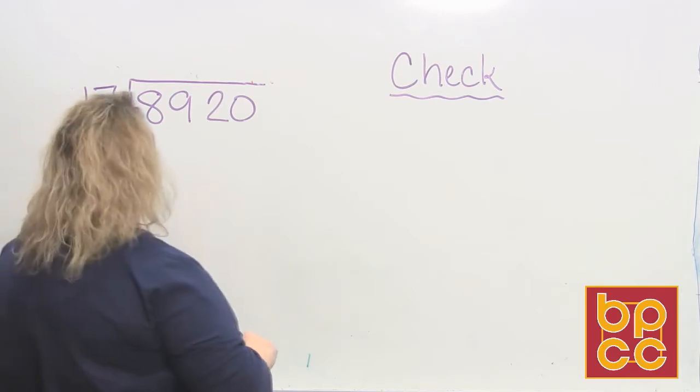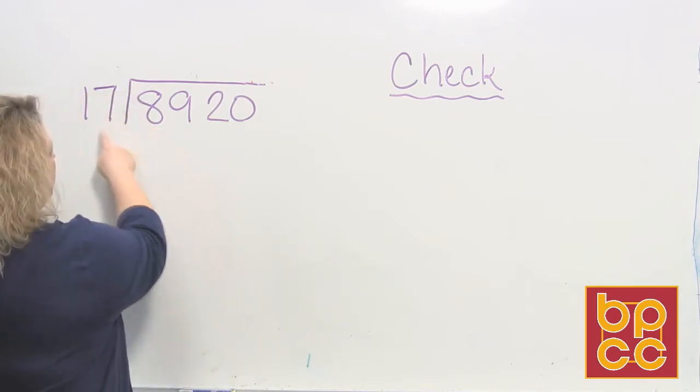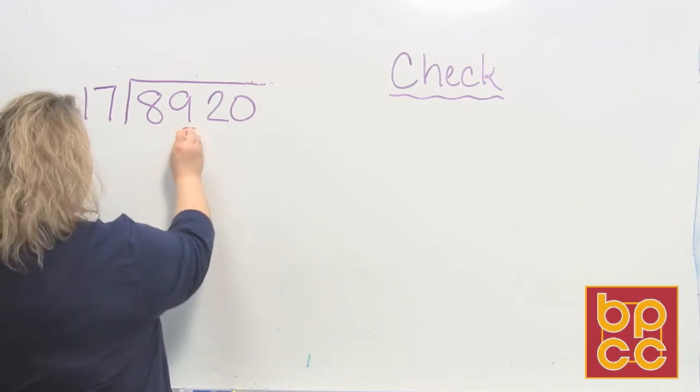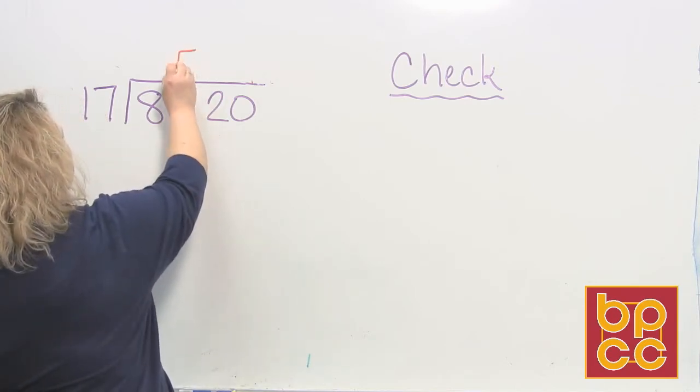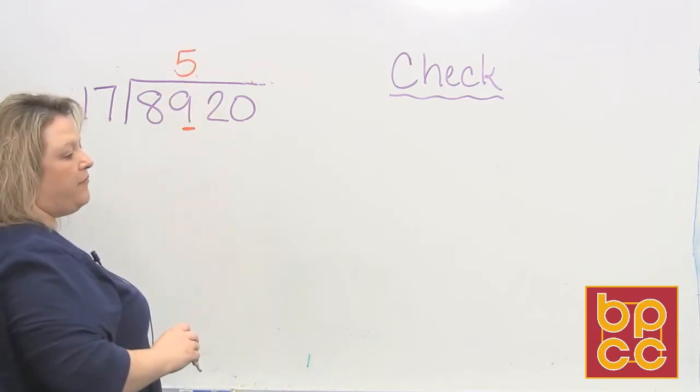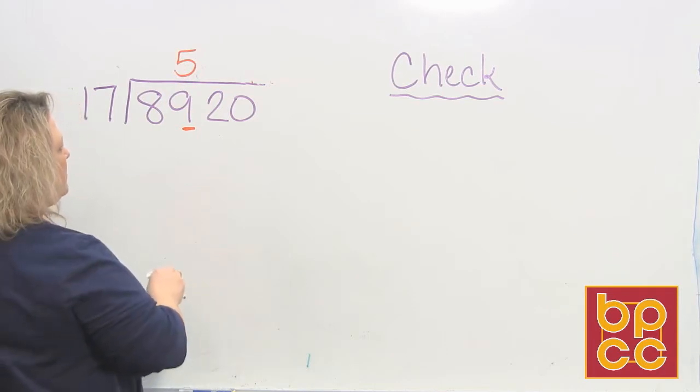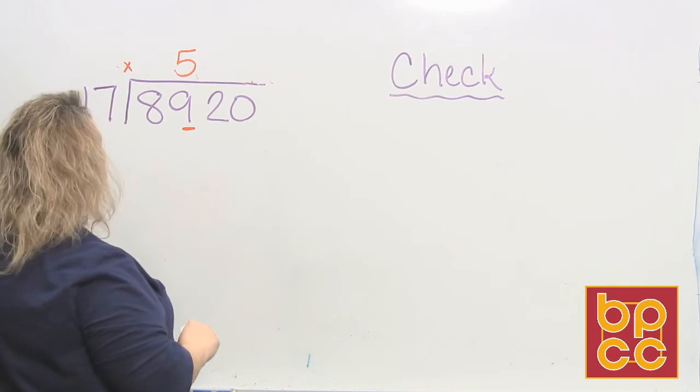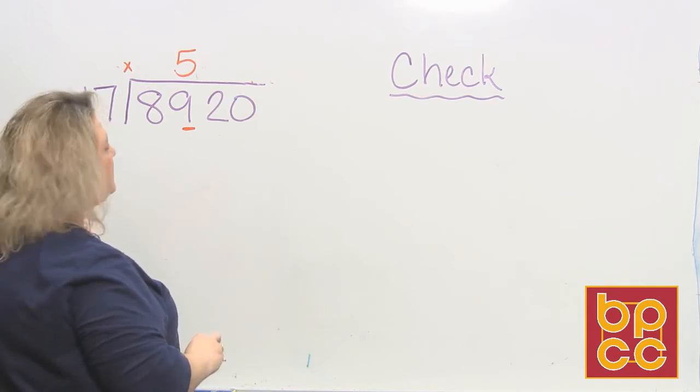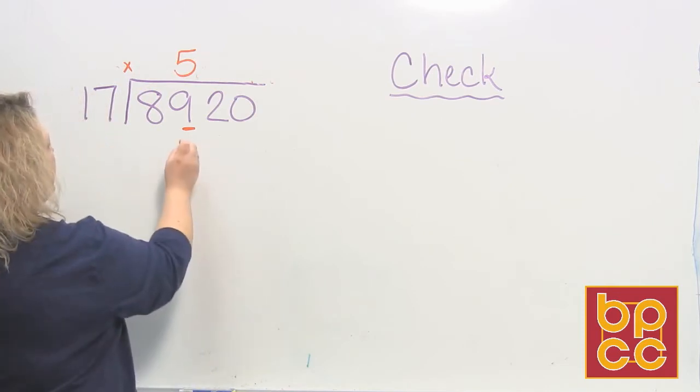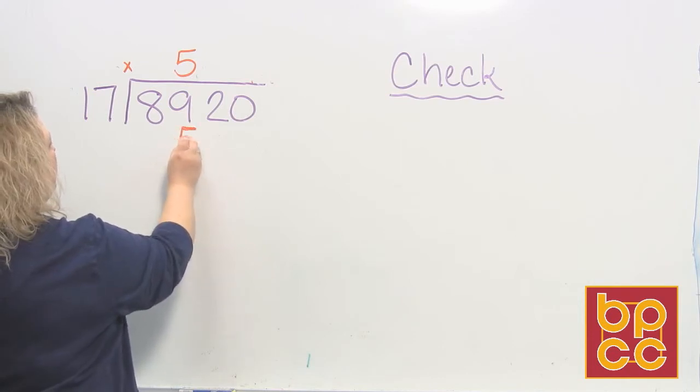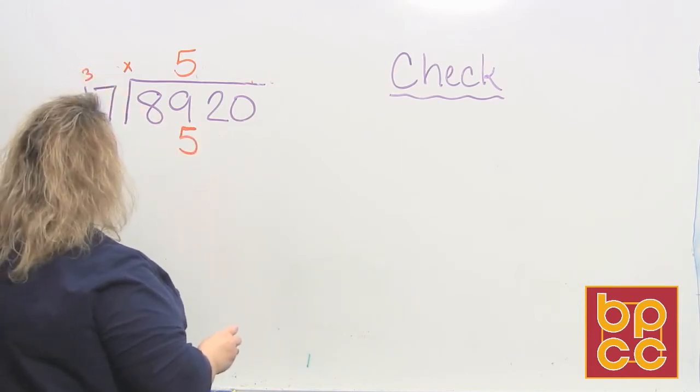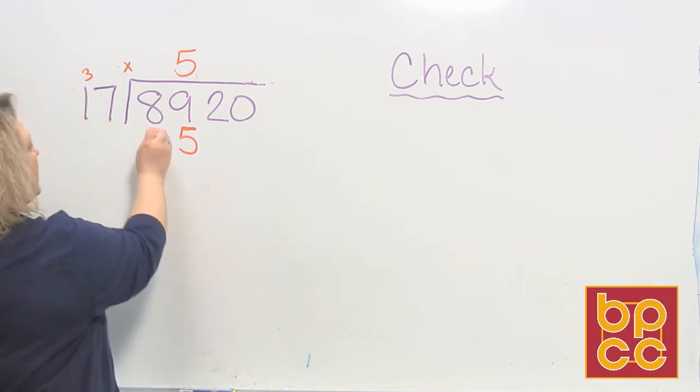So we say, how many times does 17 divide into 89? Because we can't divide 17 into 8, so we had to move over to the 9. 17 divides into 89 five times, so that's does. McDonald's means multiply, so we're going to multiply 17 times 5, and when we do that we get 7 times 5 is 35, and 5 times 1 is 5, plus 3 makes 8.